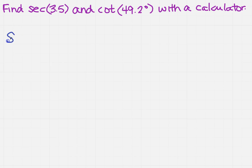So if I need to find the secant of 3.5, you'll notice that there is not a button for secant on your calculator, so you need to know the rule. Remember that the secant is 1 over the cosine of 3.5.